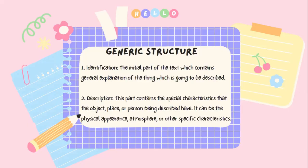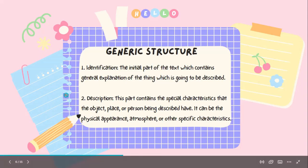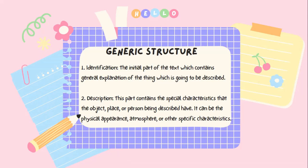Berikutnya yaitu generic structure atau struktur paragraf yang ada pada descriptive text. Ada dua. Yang pertama ada identification — the initial part of the text which contains general explanation of the text which is going to be described. And second, paragraf yang kedua disebut dengan description — this part contains the special characteristics that the object, place, or person being described have. It can be the physical appearance, atmosphere, or other specific characteristics.